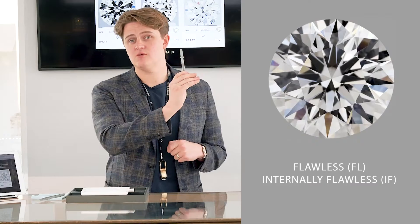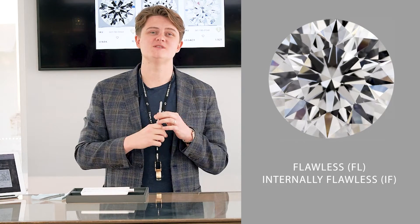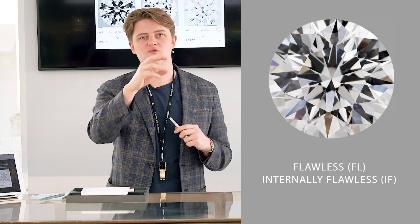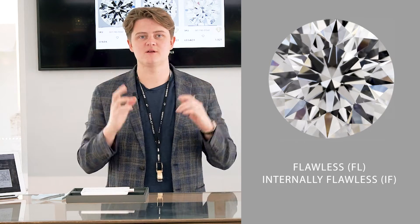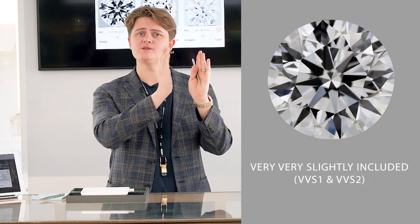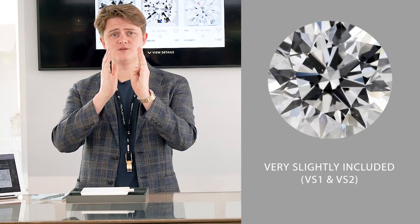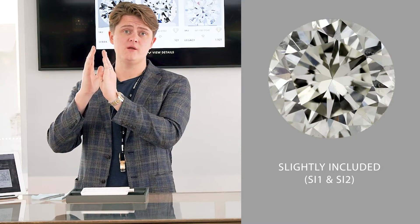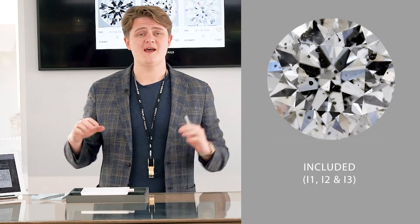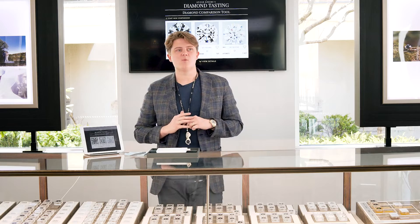The diamond clarity scale always starts at Internally Flawless, which means inside the diamond there's absolutely nothing blocking any of the light from coming through — it's absolutely perfect and clean. Going down the scale we have Very Very Slightly Included 1 and 2, Very Slightly Included 1 and 2, Slightly Included 1 and 2, and then Included 1, 2, and 3. That is the basic GIA diamond clarity scale.